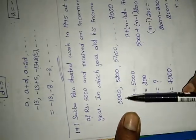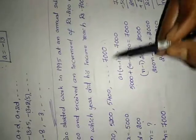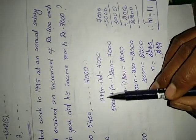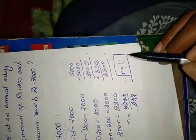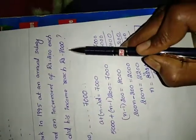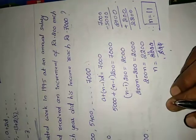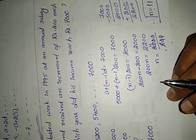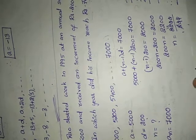Did you understand? In the first year his salary was 5000, and every year 200 is incremented. We used the general formula A_n equals A plus (n minus 1) into D, and got n equals 11. By this, exercise 6.2 is over. In the next video we will start 6.3. If you like my video, press the like button, share and subscribe to my channel. Thank you.